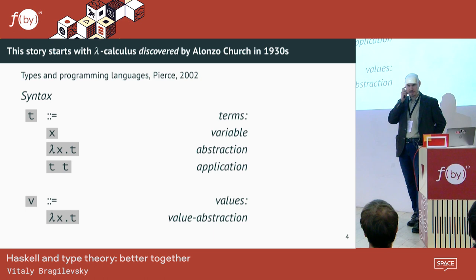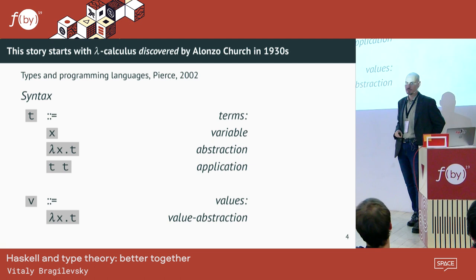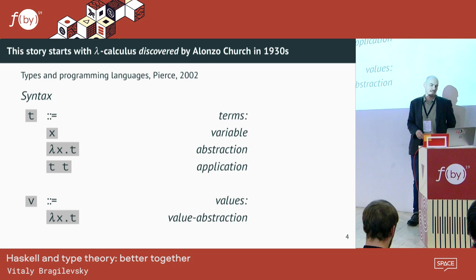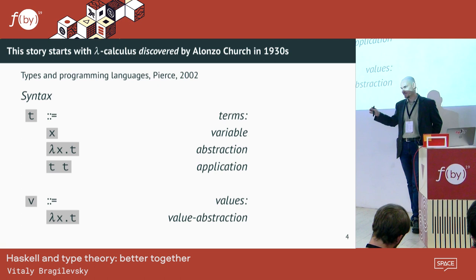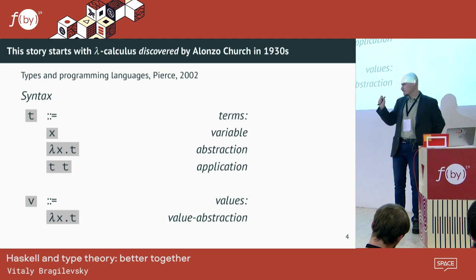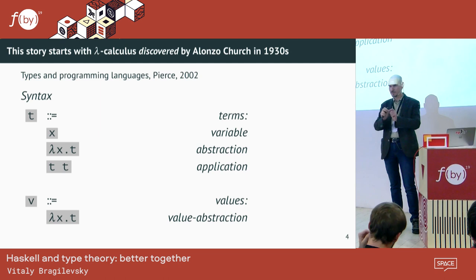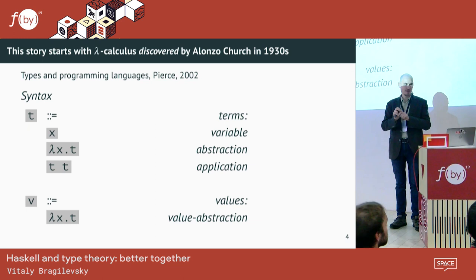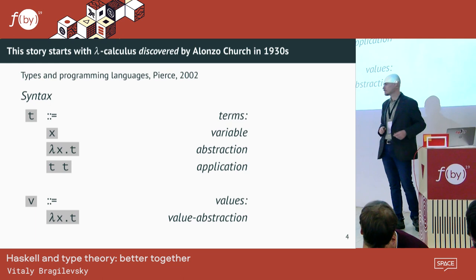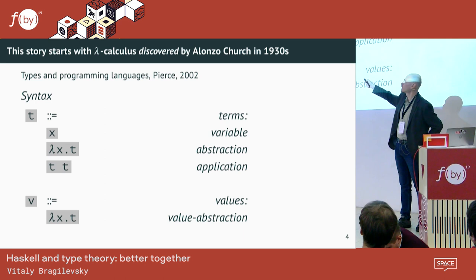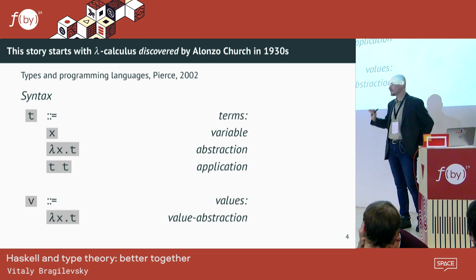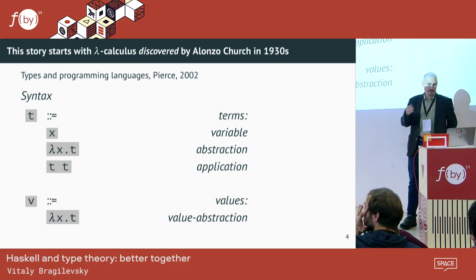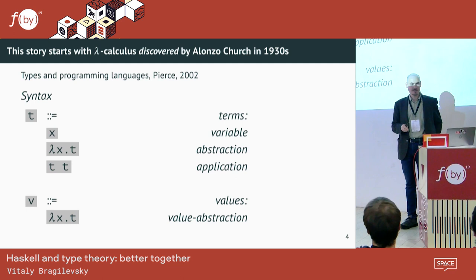In the 1930s, when it all started, there was a guy, Alonzo Church, who worked at Princeton University. He invented — or some people say discovered — lambda calculus there, around 1932–1933. I'm presenting lambda calculus here using quite modern notation. Church didn't use it, but nowadays it's very convenient. I'm using the Types and Programming Languages book by Pierce, which is the classical ABC book for type theory.